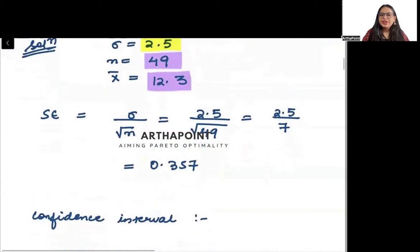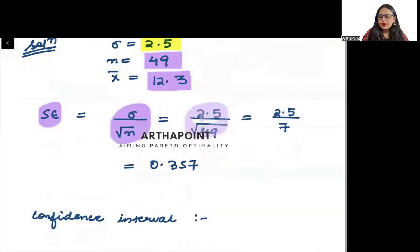You will find out the standard error. The standard error can be written as sigma by root n. So it will be 2.5 divided by root 49, which is 2.5 divided by 7. So this is going to be 0.357.